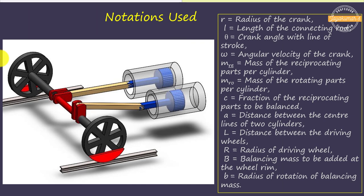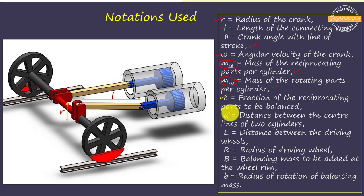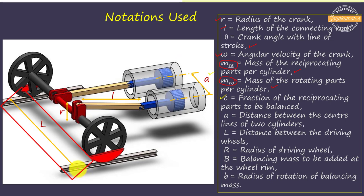We have two identical cranks, connecting rods, piston rods, pistons, and cylinders. Let R be the crank radius, L be the length of the connecting rod, θ the crank angle with the line of stroke, and ω the angular velocity of the crank. We use M_E to indicate the mass of the reciprocating parts per cylinder, and M_O to denote the mass of the rotating parts per cylinder. Small letter c is the fraction of the reciprocating parts to be balanced, and A is the distance between the center lines of the two cylinders.